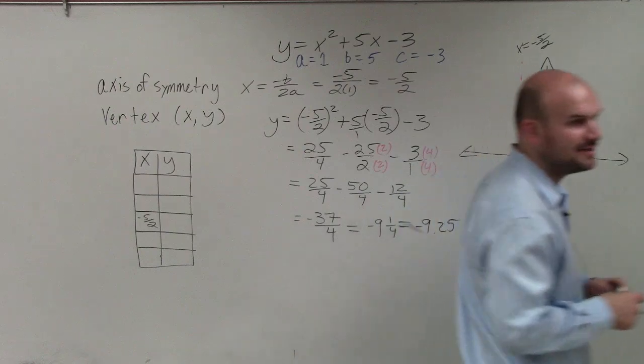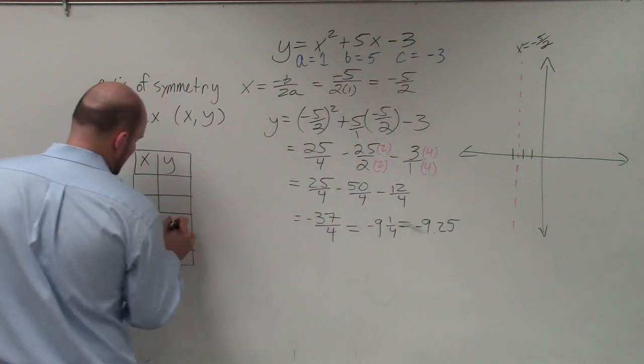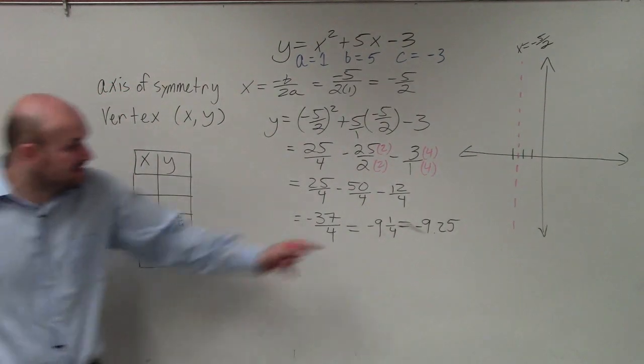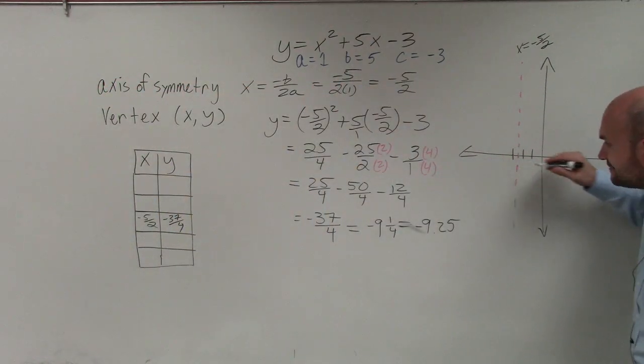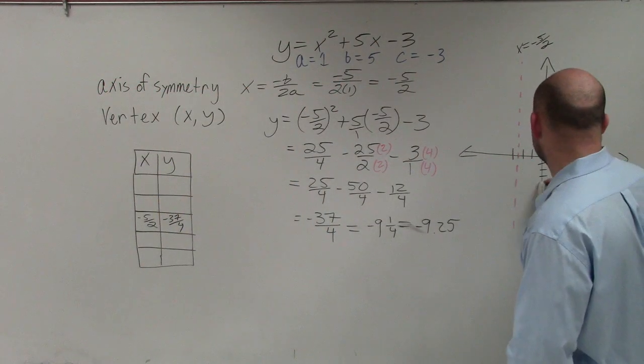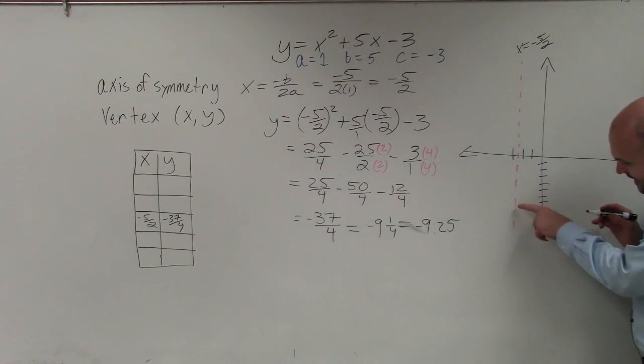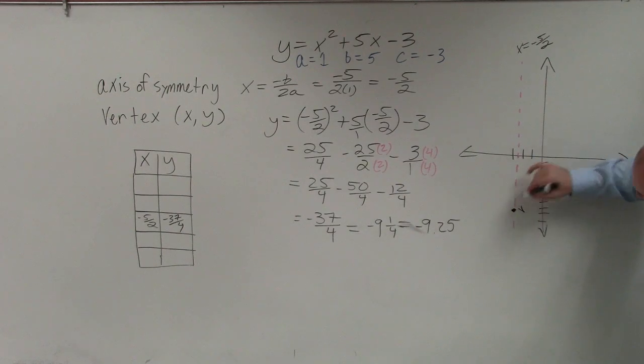Did anybody get negative 9.25? Good. So I'll just write this as negative 37 fourths. But if you want to graph the fraction, think of it as a decimal. So we got to go down to negative 9.25. So 1, 2, 3, 4, 5, 6, 7, 8, 9, 10. So it's going to be down 9 and then just like 0.5 away, which would be like right there. So that is now my vertex.